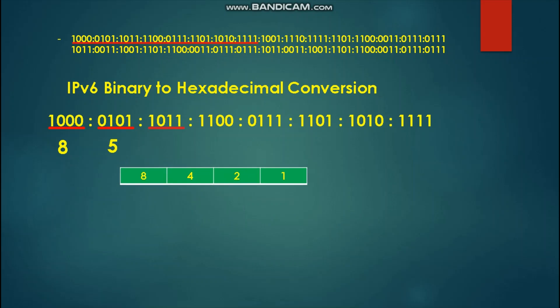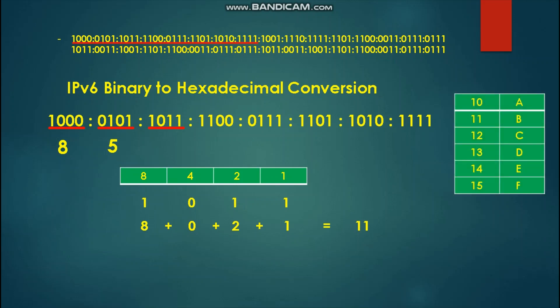Next, we solve for 1-0-1-1 and place it under our table. The binary 1s give us 8 plus 2 plus 1, which equals 11. Since 11 is two digits, it is not acceptable for hexadecimal directly. We use our table to find the equivalent letter of 11, which is the letter B. We place B as our hexadecimal result.